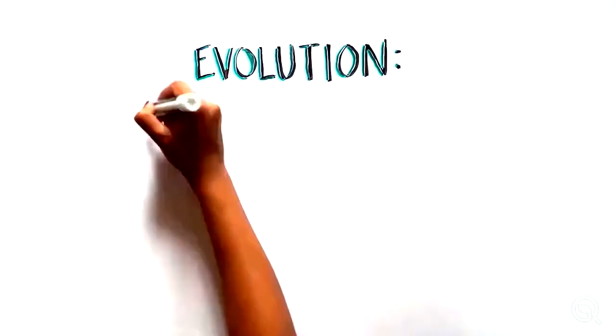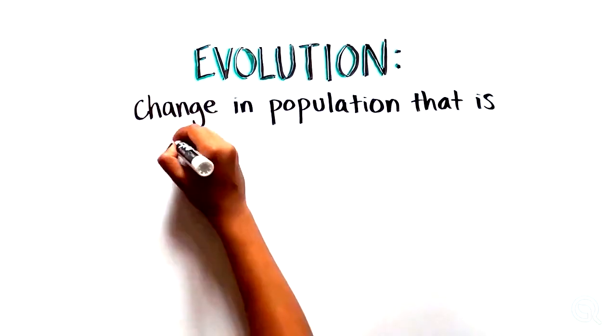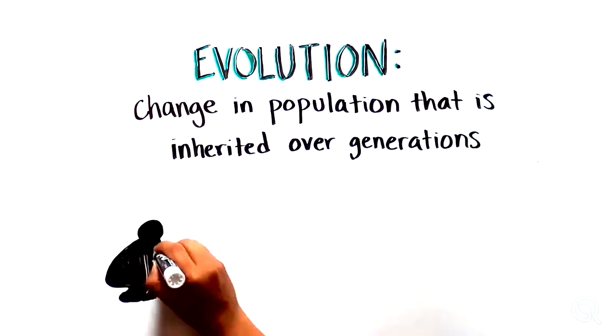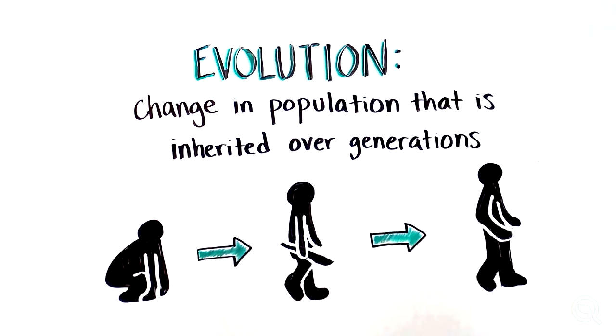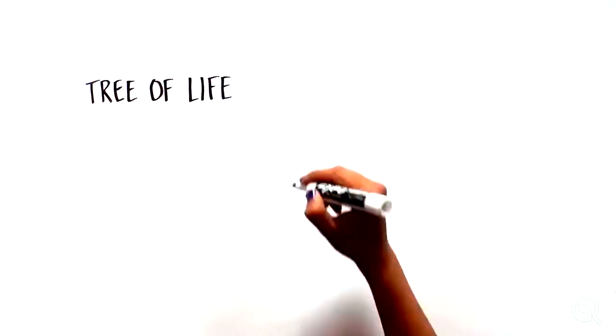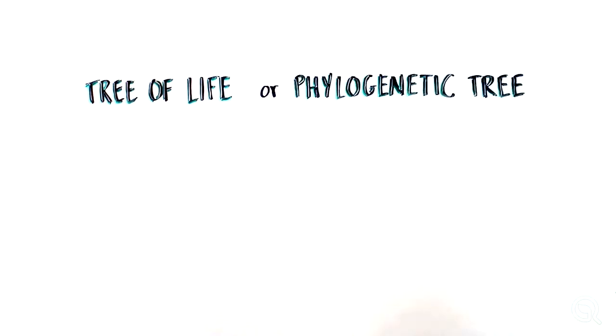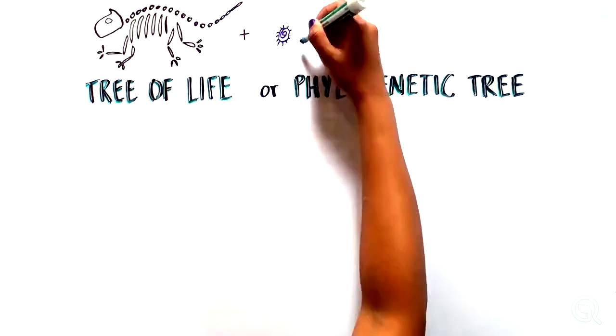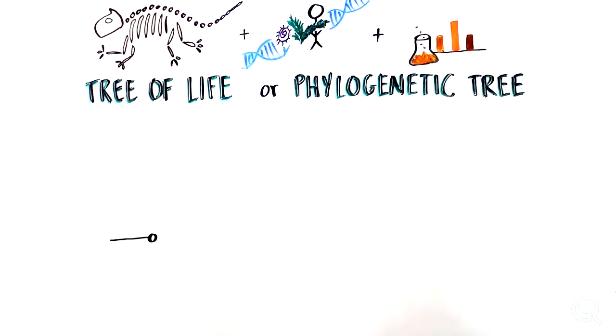Evolution refers to the change in a population that is inherited over generations. To understand that, we can start with a depiction of the tree of life, also called the phylogenetic tree, which is a way to visualize how different species of organisms are evolutionarily related.